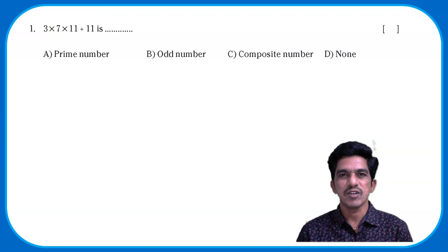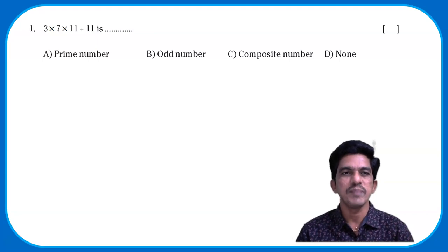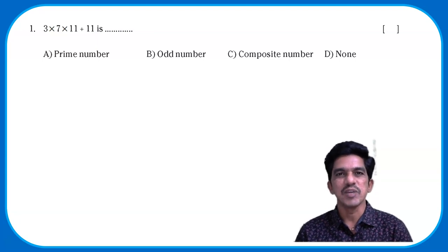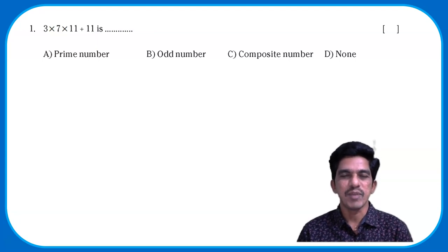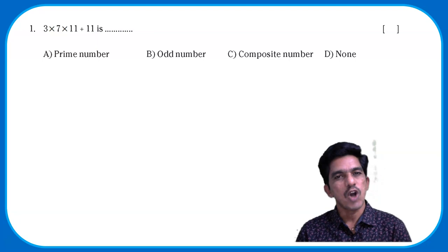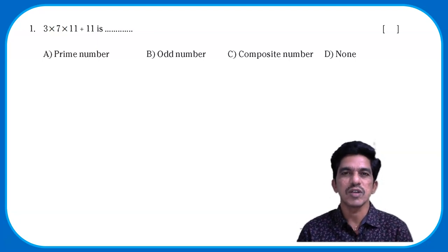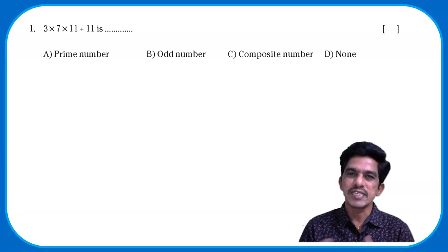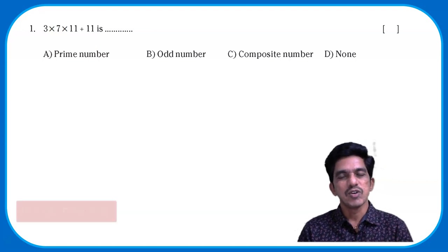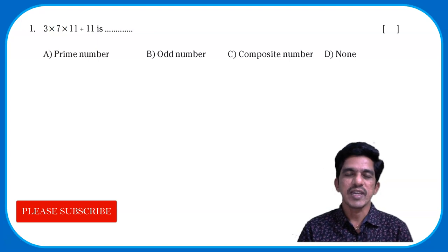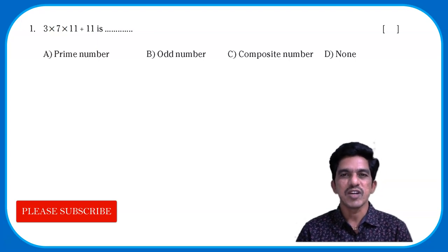Now, this is your first question — the first multiple choice question. 3×7×11 + 11 is a blank number. Is it a prime number? Is it an odd number? A composite number? Or none of these? We have to explain the logic to prove that this is a composite number.